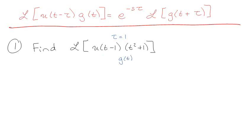g of t is equal to t squared plus 1. So if I need to take a Laplace of t plus tau, that's t plus 1, so that means everywhere I see a t, I put t plus 1 squared. So t squared plus 2t plus 1 plus 1, t squared plus 2t plus 2.